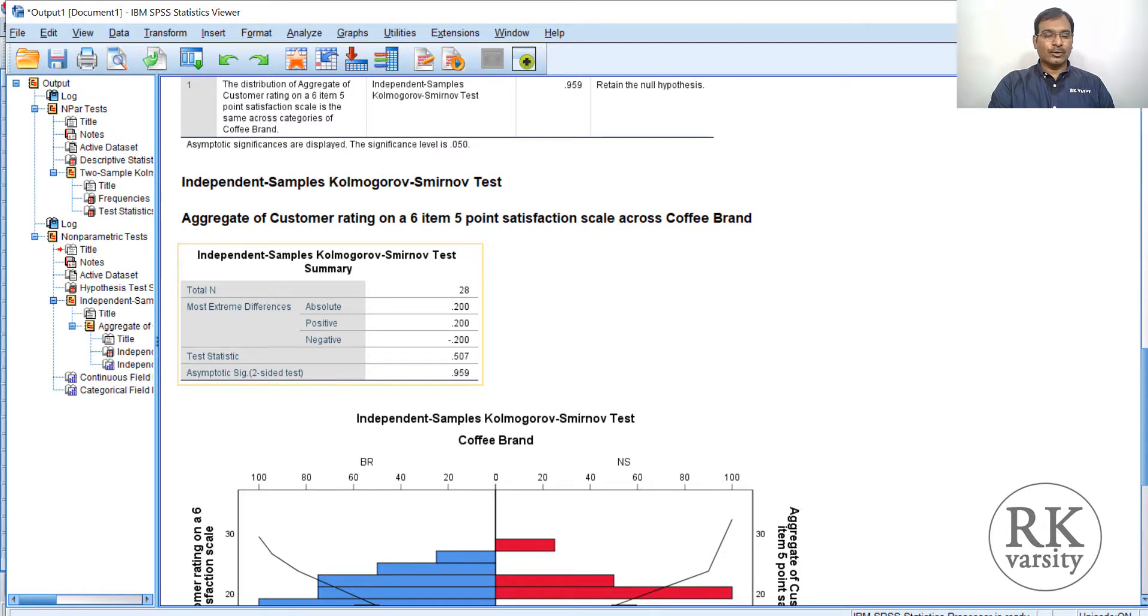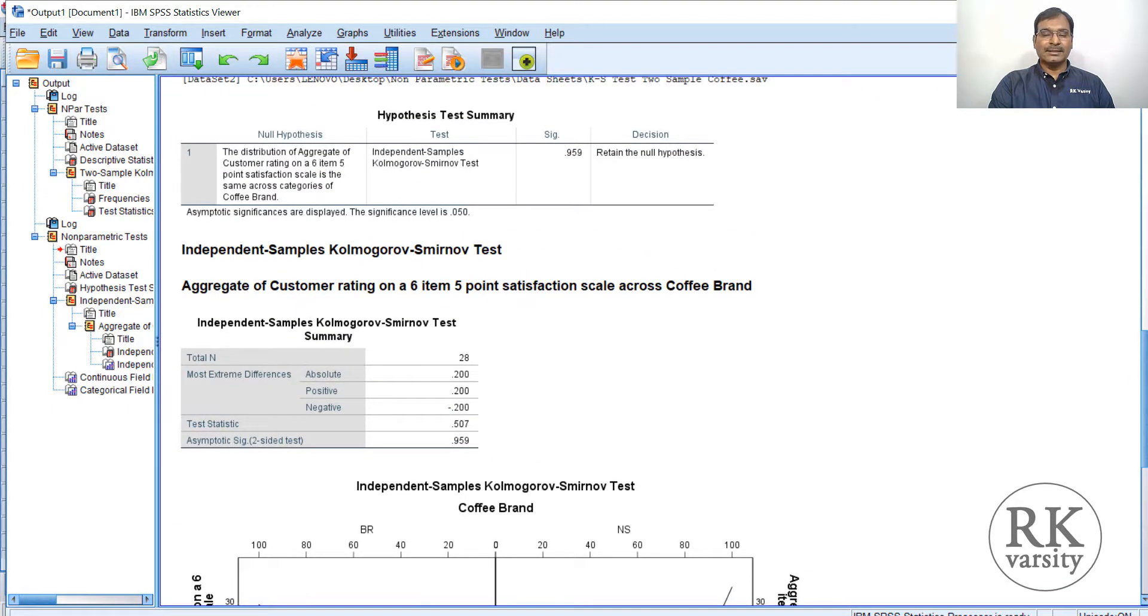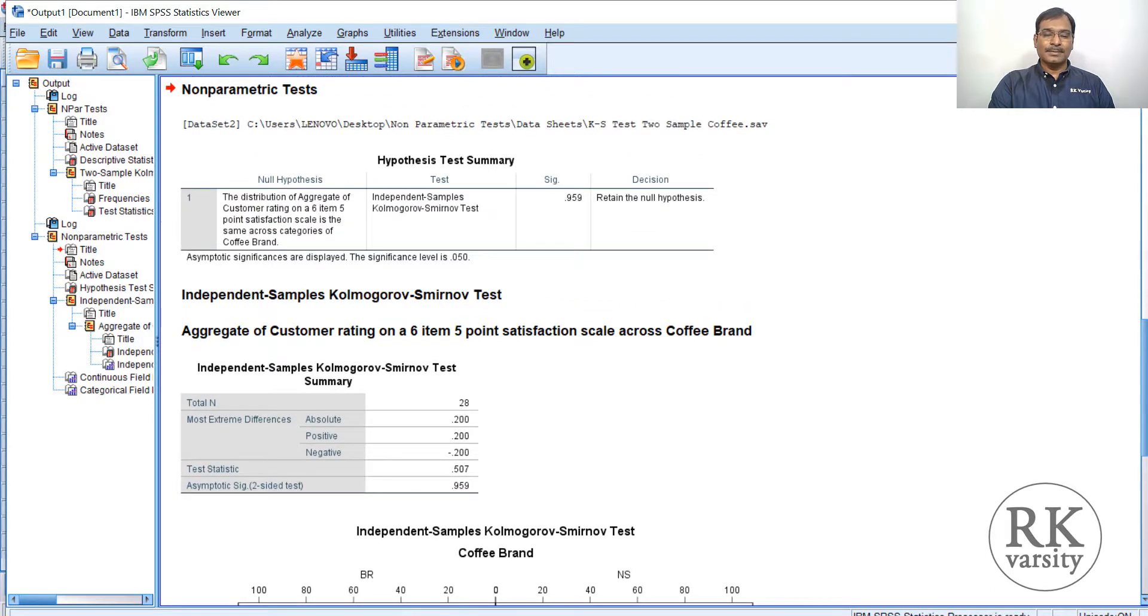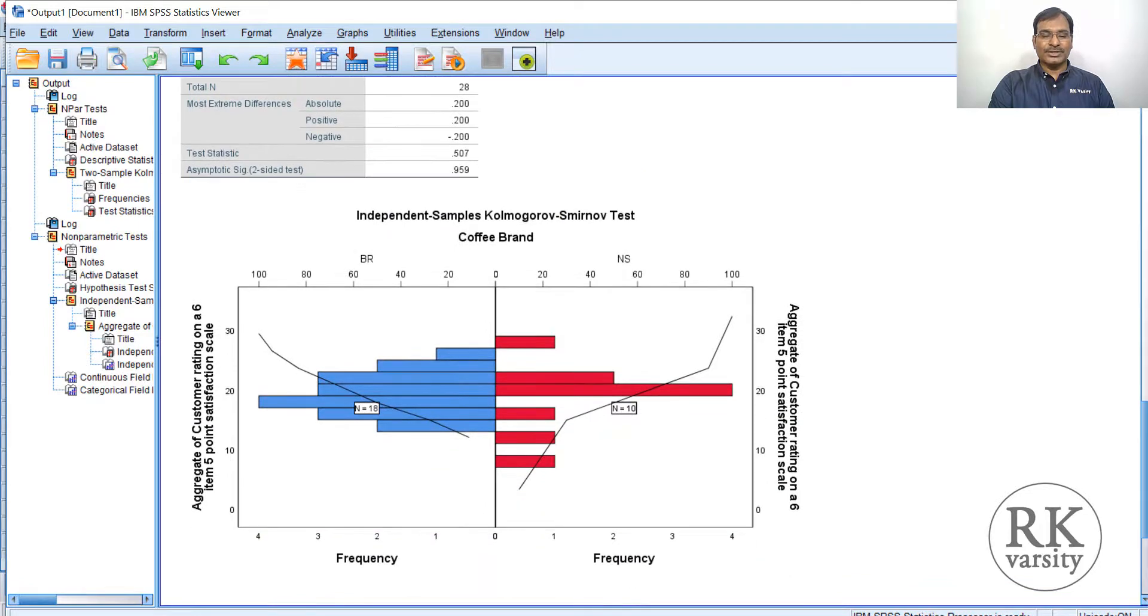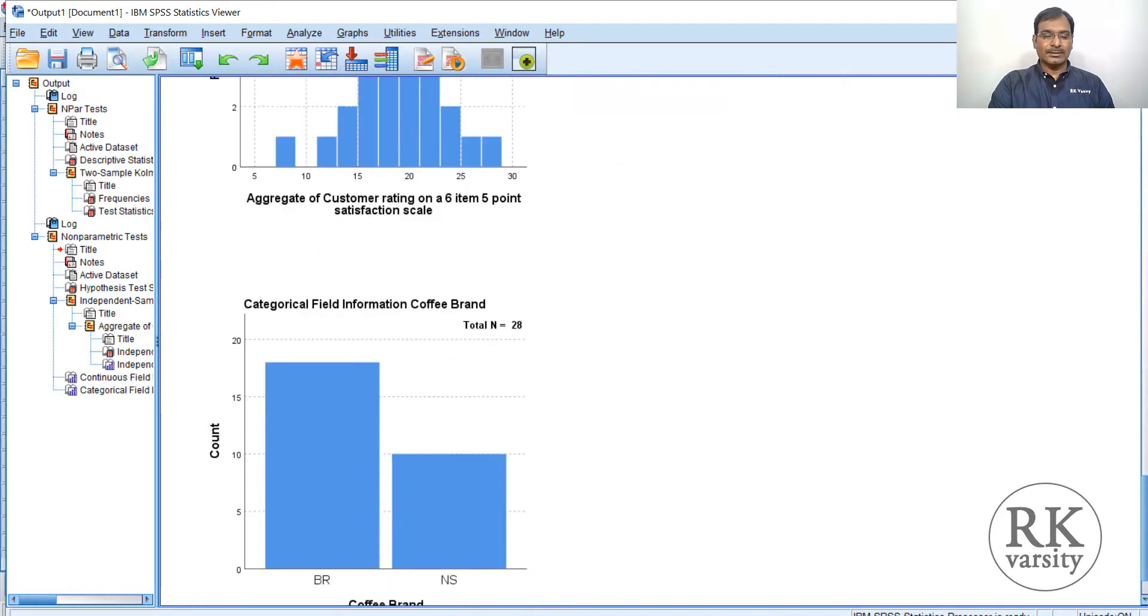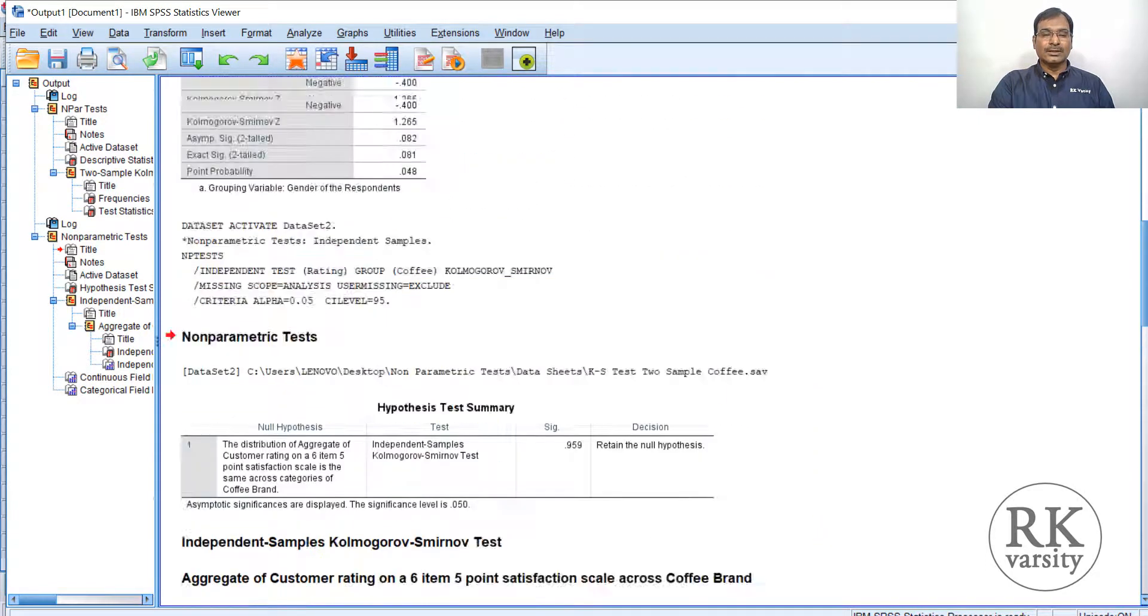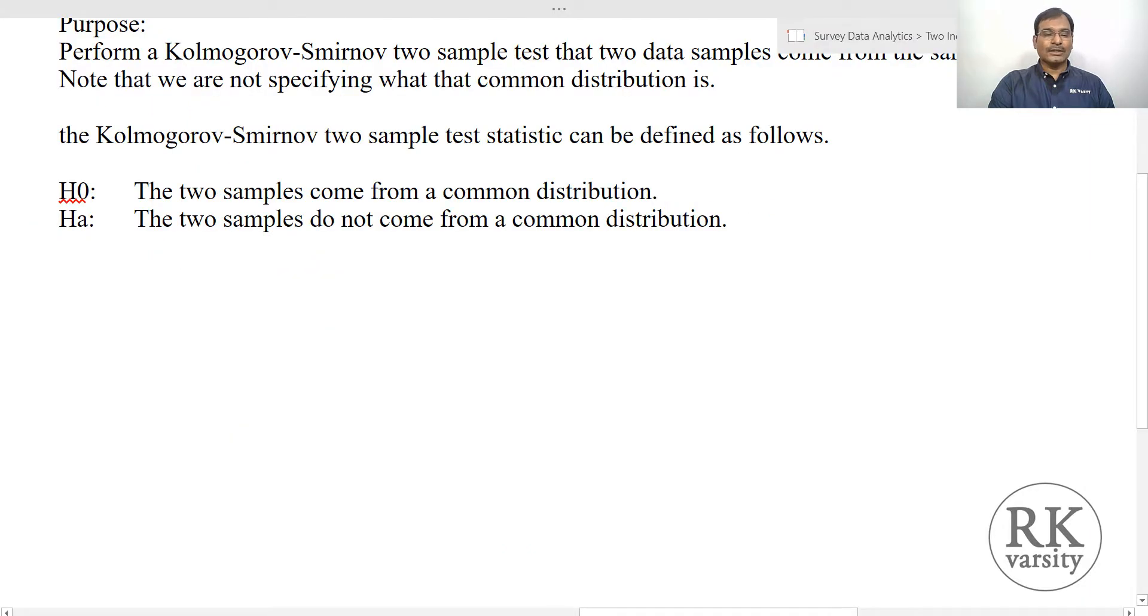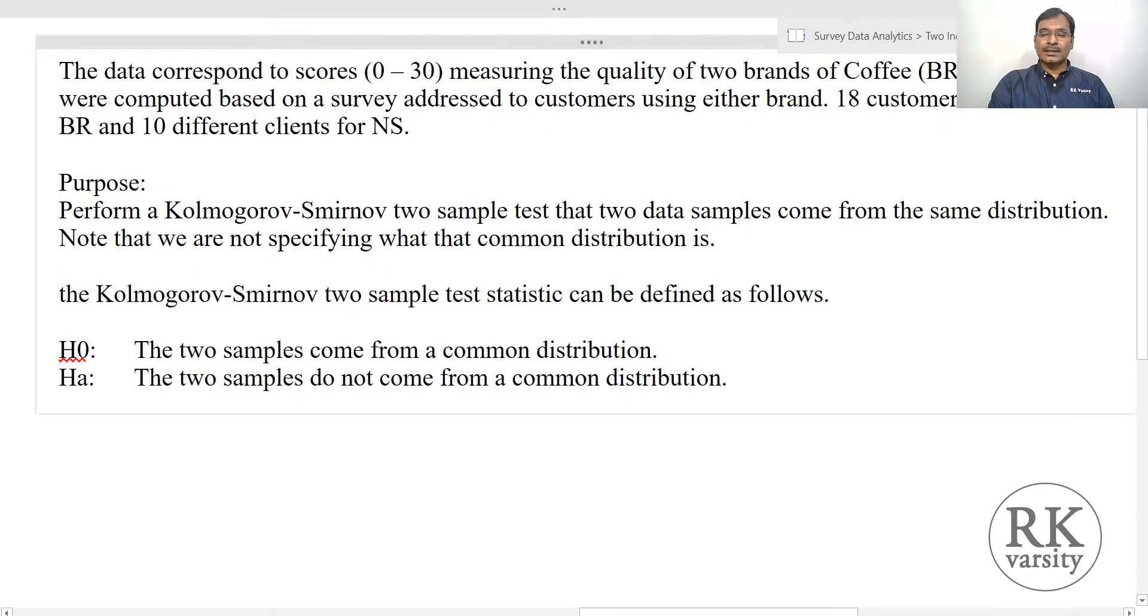Independent sample Kolmogorov-Smirnov test values: N, absolute values, positive, negative. Test statistic is 0.075 and asymptotic significance value is 0.95, because of which we retain the null hypothesis. When we are retaining the null hypothesis, it clearly indicates that the two coffee brands come from the same population distribution. Here you can see the independent samples, coffee brands, their frequency distribution tables, cumulative frequency distribution table, and categorical field information. Based on this test analysis, we can say that the two samples come from the same common distribution.